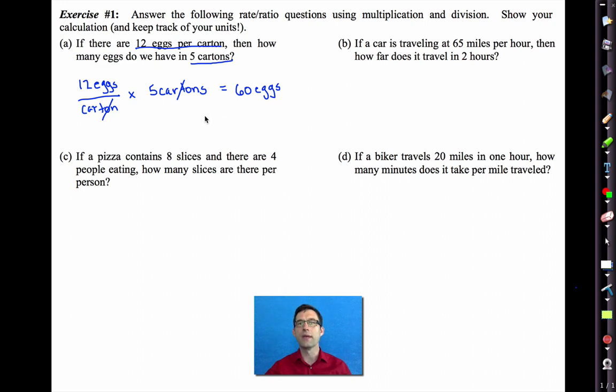Take a look at letter B. If a car is traveling 65 miles per hour, how far does it travel in two hours? Go ahead and pause the video again. All right, we have another problem involving multiplication. The car is traveling 65 miles in one hour. How many does it travel in two hours? Well, the hours cancel and it leaves us with 130 miles.